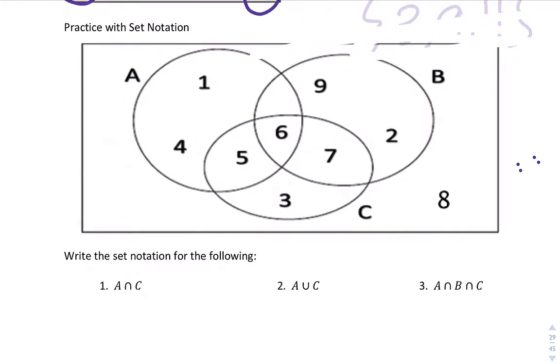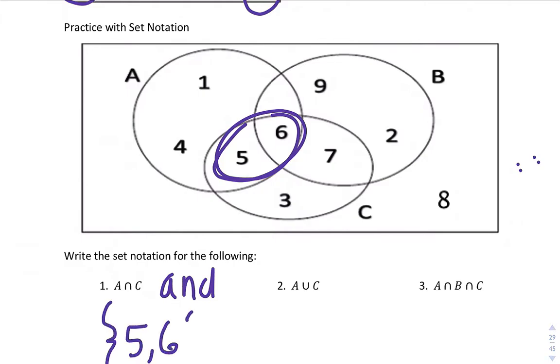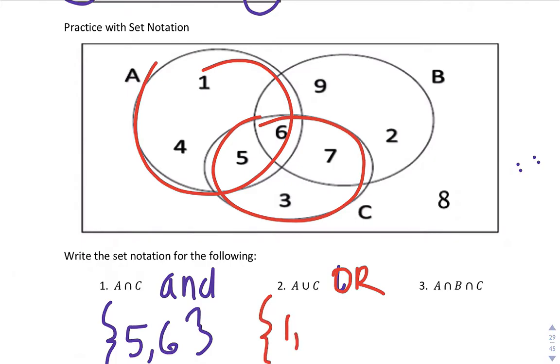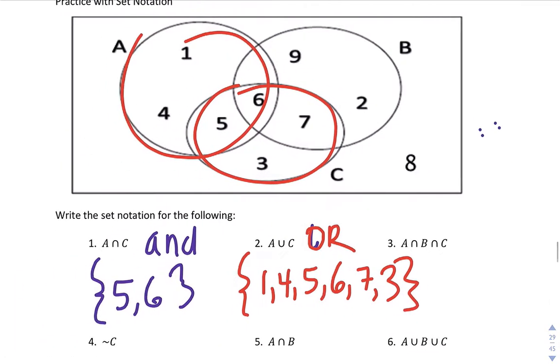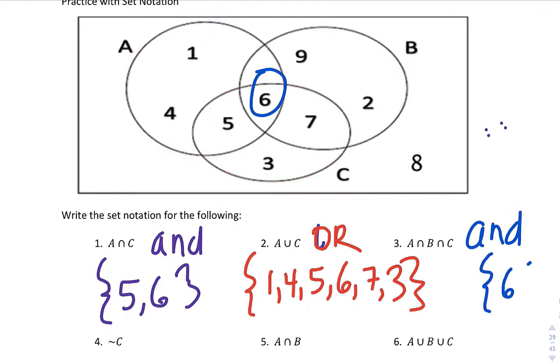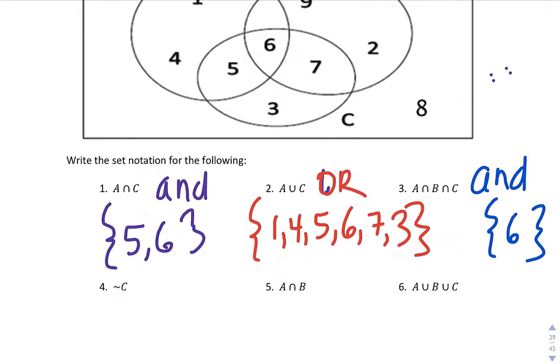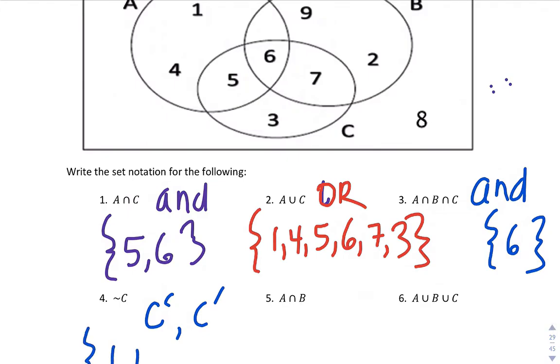So let's practice with set notation. All right. What's A and C? So again, this means and. So and means they have to be in both. So A and C would be 5 and 6. So 5 and 6 are in A and C. Okay. How about A or C? So one or the other or both. So it would be 1, 4, 5, 6, 7, and 3. Okay. How about in A and B and C? So and meaning has to be in all of them. All right. So where do they all overlap? Oh, that would be right here. It would be 6. How about not in C? So that would be 1, 4, 9, 2, and 8. So all of those are not in C.